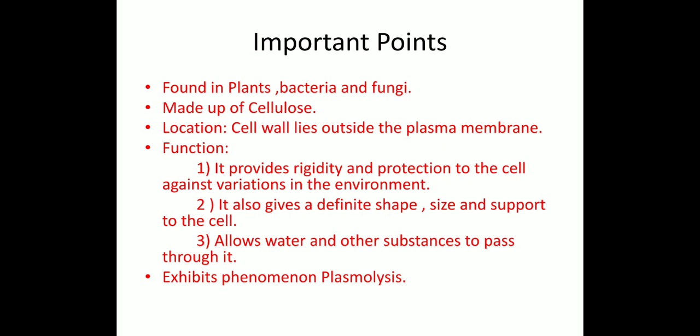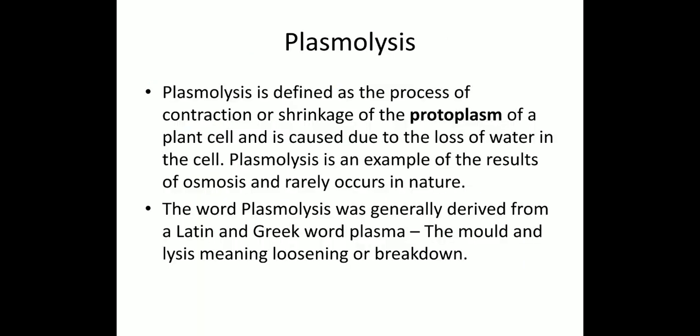Cell wall exhibits a phenomenon known as plasmolysis, which we will explain in the next slides. Plasmolysis is the process of contraction or shrinkage of the protoplasm of a plant cell caused due to loss of water. It is a result of osmosis, which we have already discussed. The word plasmolysis is derived from Latin and Greek words: plasma, which means mold, and lysis, which means breakdown and loosening. So basically, this is the contraction or shrinkage of the protoplasm of a cell.